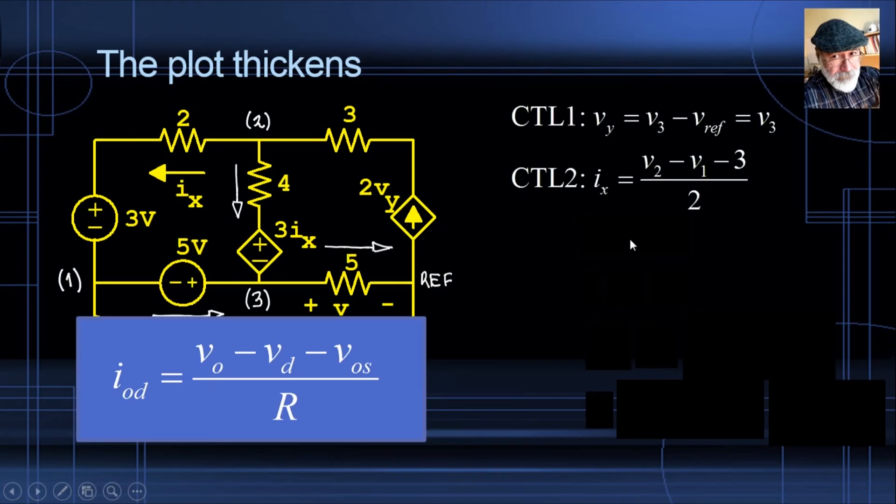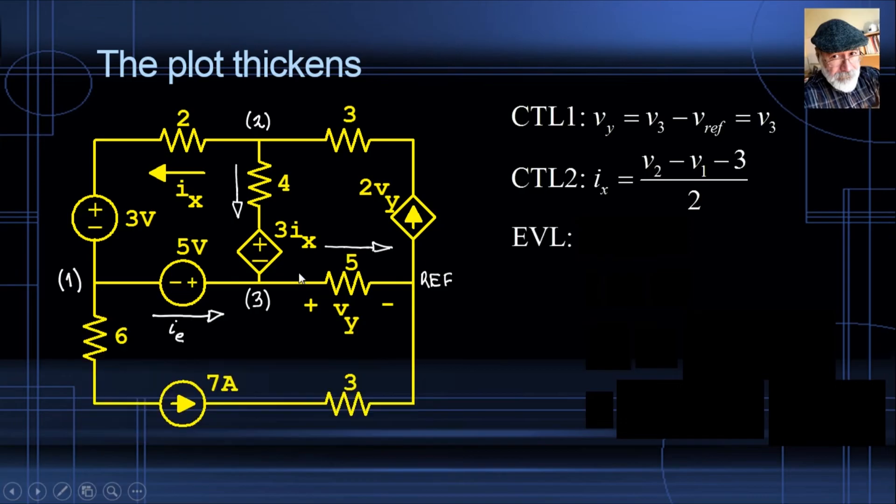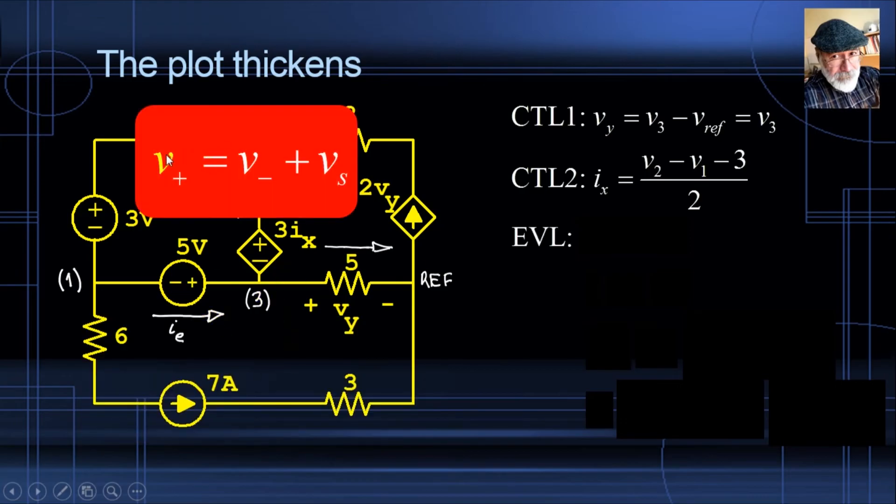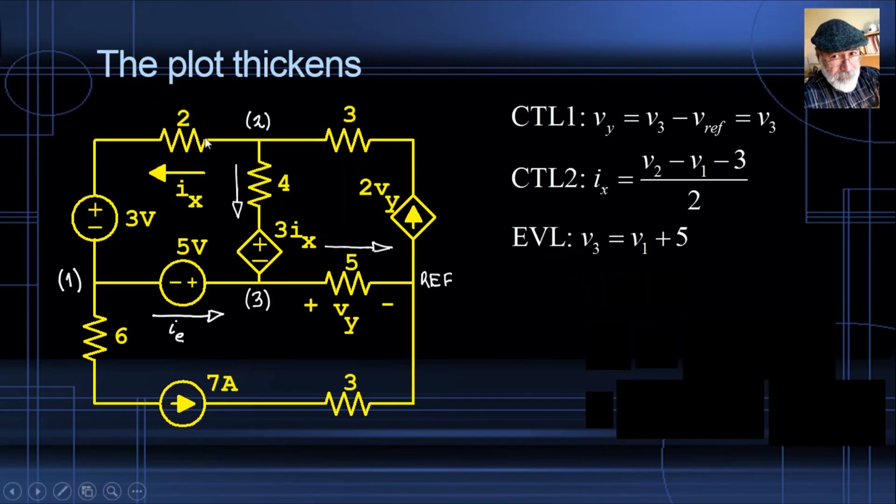Now we go for the evil equation, and we know what an evil equation is. It is V plus is V minus plus the value of the source. For this evil branch here, V plus is V3, and V minus is V1, and the value of the source is 5. So that equation is V3 is V1 plus 5. And there is your evil equation. We're left with the three KCL equations, one for node 1, 2 and 3, but never for the reference node.